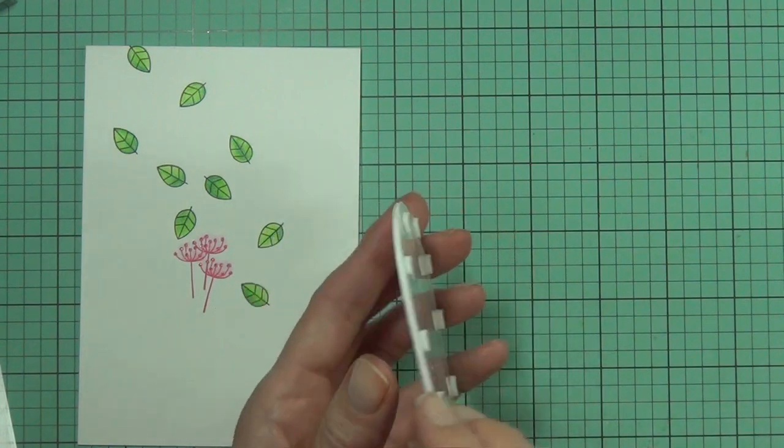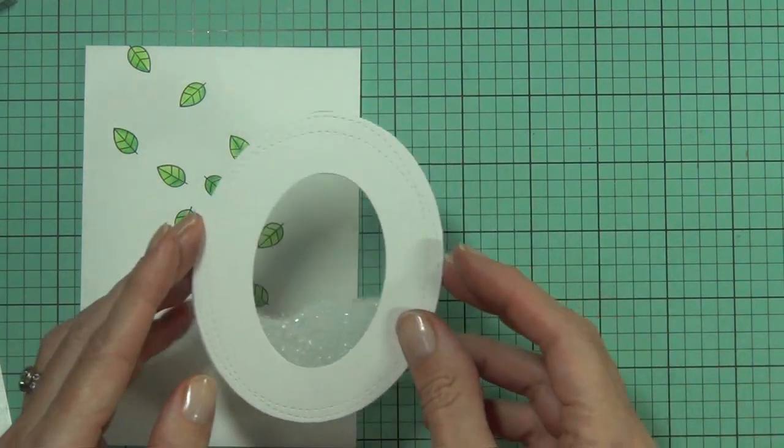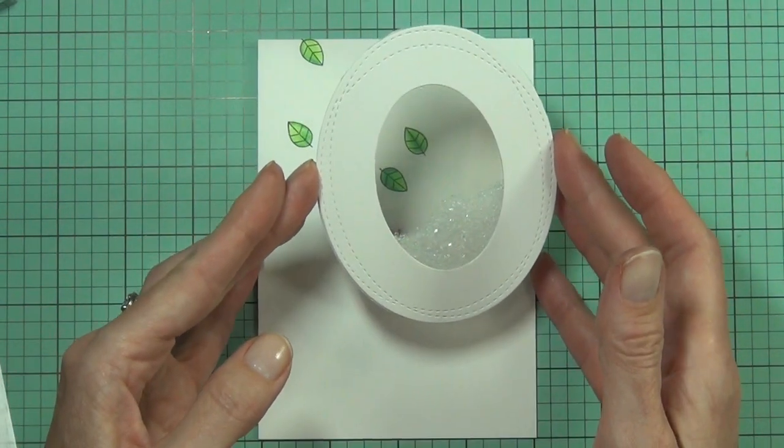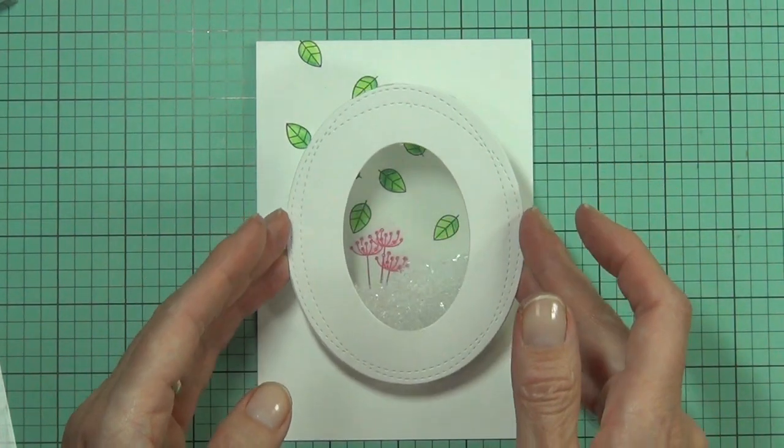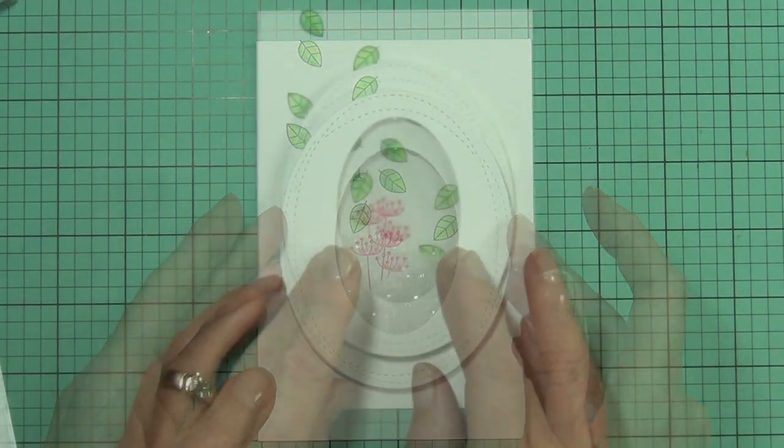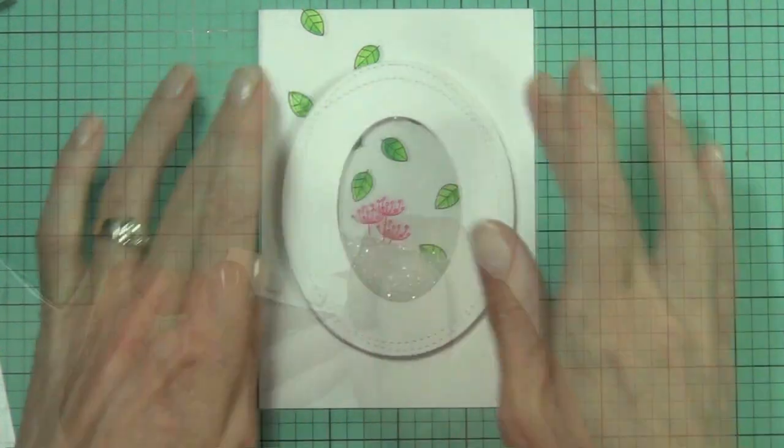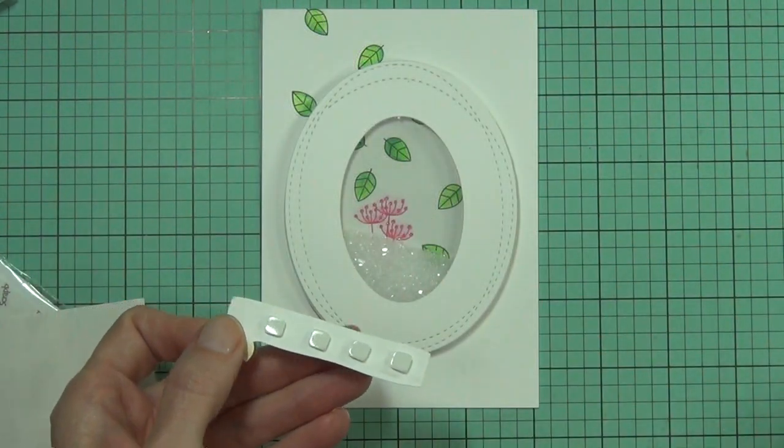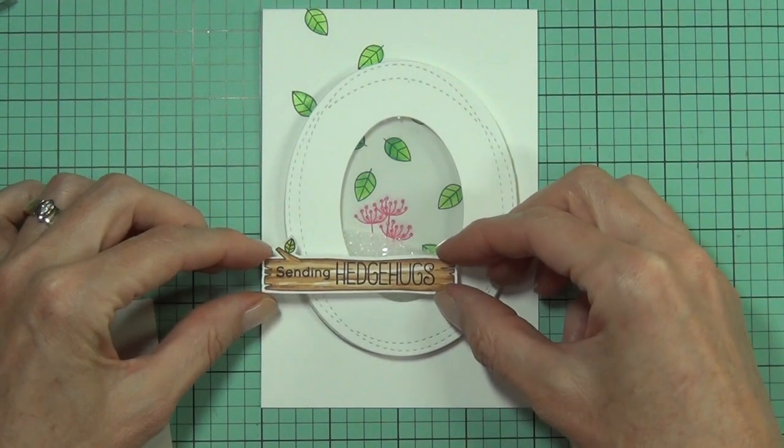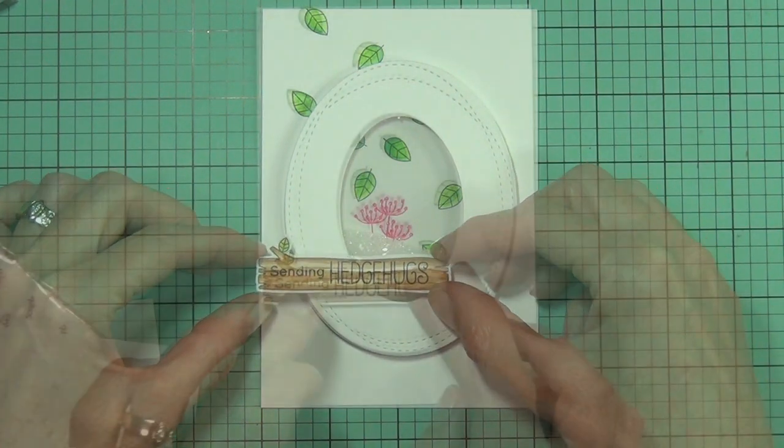I'm going to pop this whole panel up as well and I'm using some Scrapbook Adhesives foam squares - one of my favorite go-to foam adhesives - and it's just going directly on the front of the card. And then I can pop up my sentiment as well. It's going to be a fairly clean and simple card.